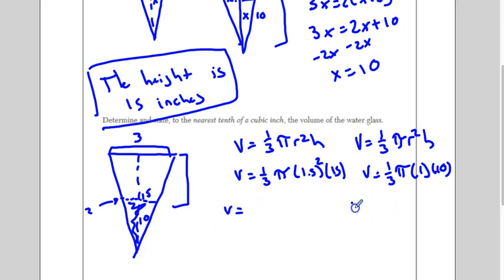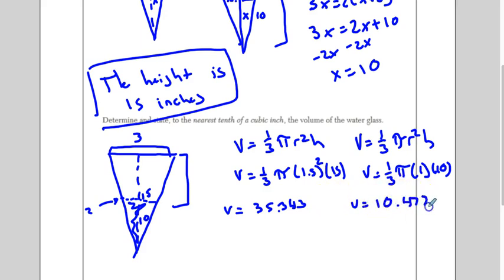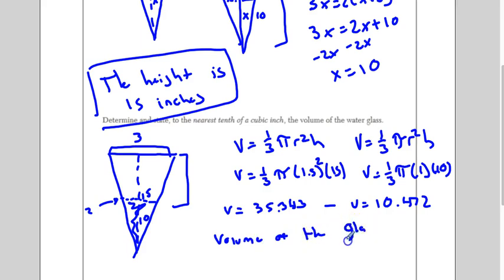Now we're going to put these in the calculator and write out every number we see. What I get for the big cone is 35.343. And for the small cone I get 10.472. And what I'm going to do is subtract these, because I'm cutting out the small one. The volume of the glass is 24.9 cubic inches — I'm rounding there because it says to the nearest tenth of a cubic inch.